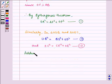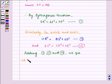Now, adding (1), (2), and (3), we get OA² + OB² + OC² = AF² + OF² + BD² + OD² + CE² + OE².